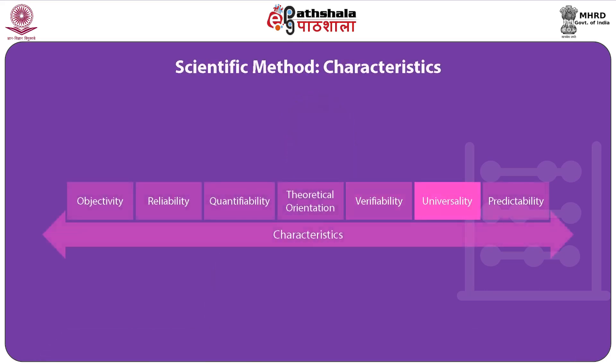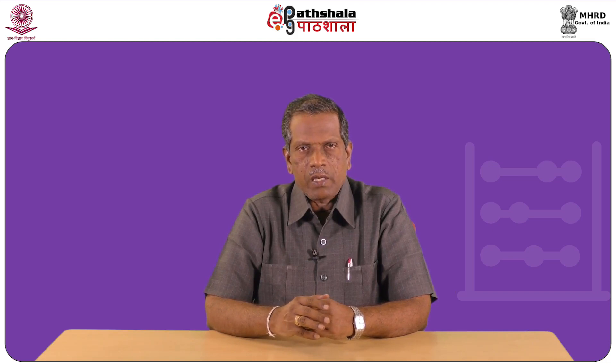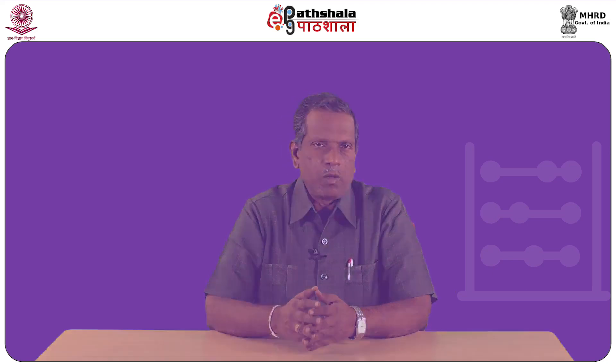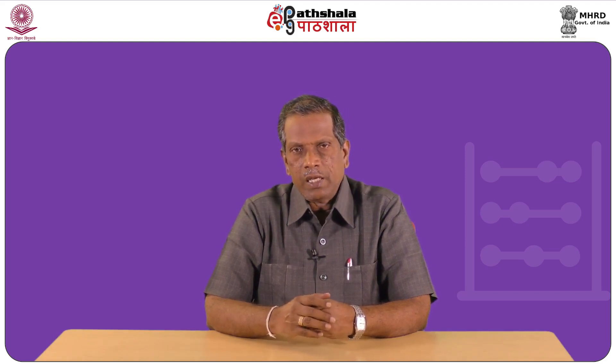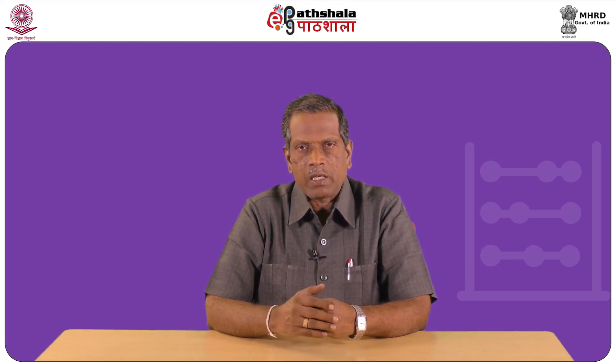Another characteristic of scientific method is universality. Science is not concerned with individual objects, but with different types, kinds, and classes of objectives. Therefore, researchers should make efforts to develop laws and theoretical propositions that are universally applicable. The next characteristic is predictability. Any subject matter scientifically studied should be amenable to predictability, because most events and happenings occur at regular intervals on a similar basis.